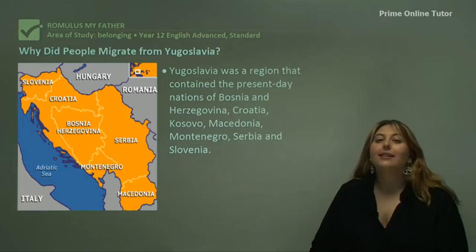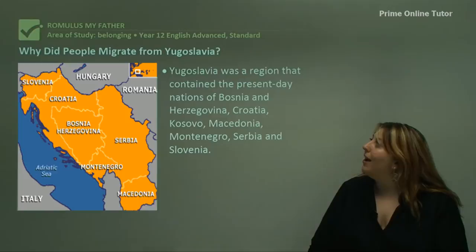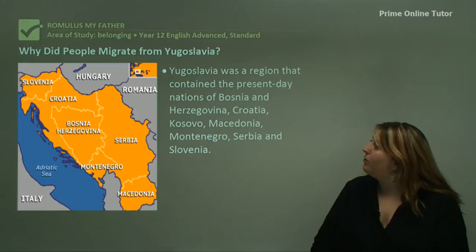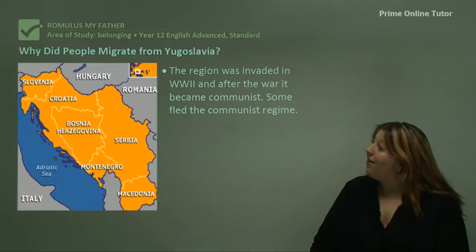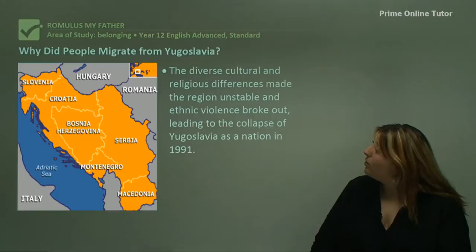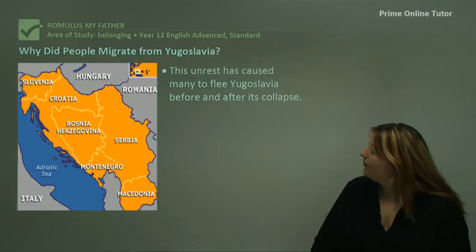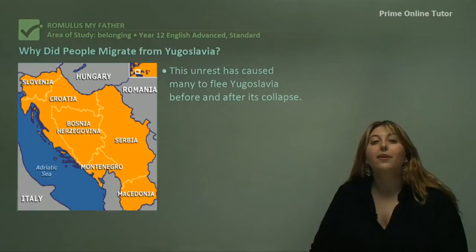We also need to think about where the people in this text come from. So why did people migrate from Yugoslavia in the first place? Yugoslavia was a region that contained the present-day nations of Bosnia and Herzegovina, Croatia, Kosovo, Macedonia, Montenegro, Serbia and Slovenia. The region was invaded in World War II and after that it became communist. Some fled the communist regime. The diverse cultural and religious differences made the region very unstable and ethnic violence broke out, leading to the collapse of Yugoslavia as a nation in 1991. This unrest caused many to flee Yugoslavia both before and after its collapse.